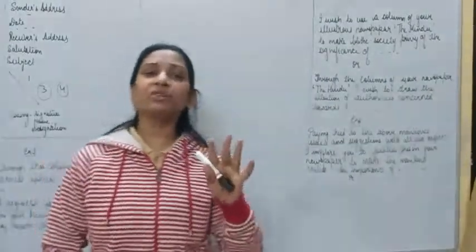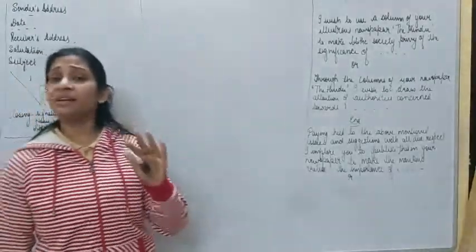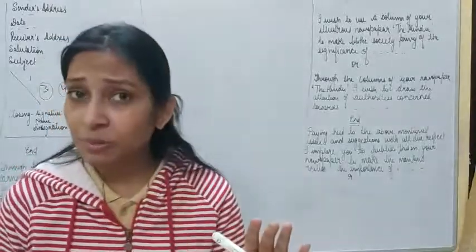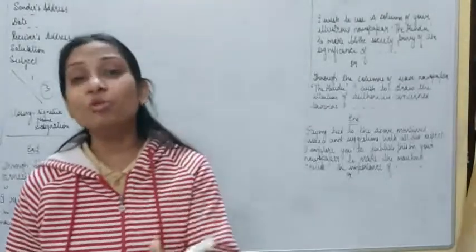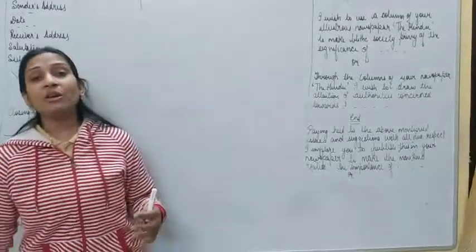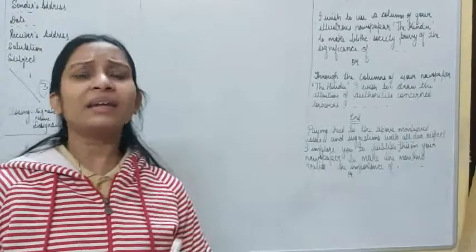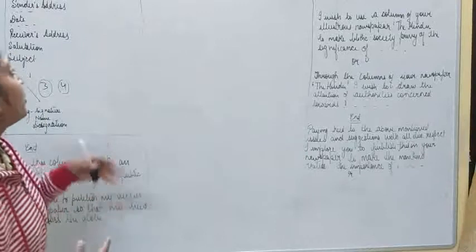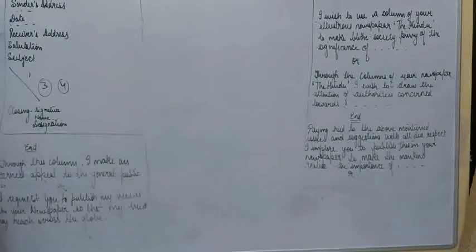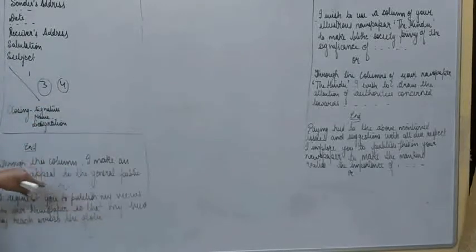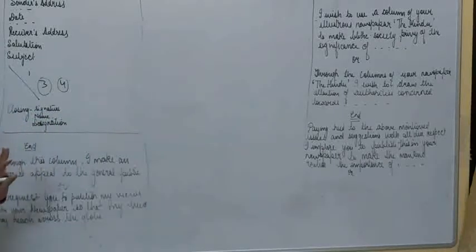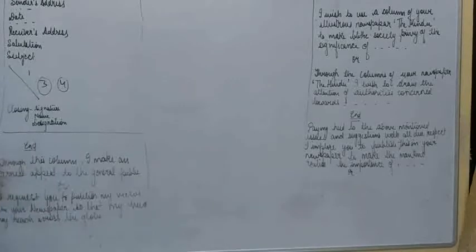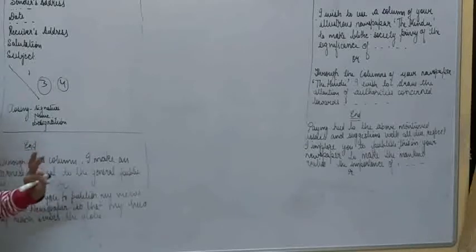So to recap: editorial letters are letters written to the editor of any newspaper so that we can get our views printed in his or her newspaper. The format is: sender's address, leave a line, date, leave a line, receiver's address, salutation, subject, body of the letter with three to four paragraphs, and closing with signature, name, and designation. If there is no designation, write 'a responsible citizen.'